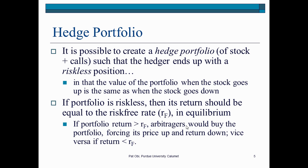In the context of the binomial model, you're going to create a hedge portfolio — the term portfolio used in a generic sense, meaning a position comprising two or more individual instruments. The first instrument is a long position in the stock, meaning you buy a stock, and the other is a short position in the call, meaning you sell a call. This portfolio is created such that you end up with a riskless position, in the sense that the value of this hedge portfolio would be the same regardless of whether the stock goes up or down.